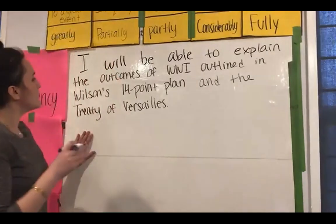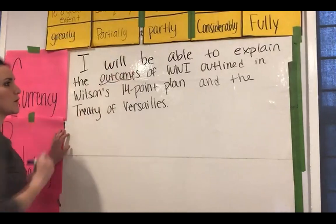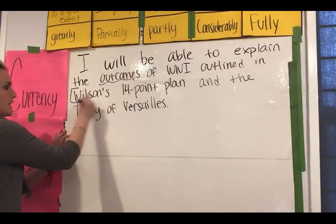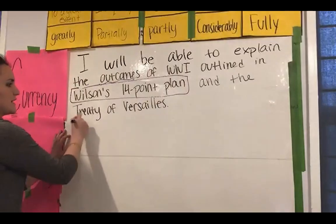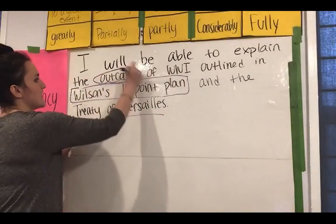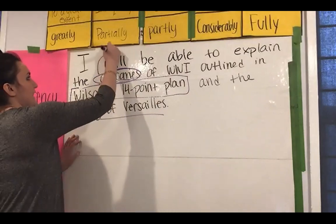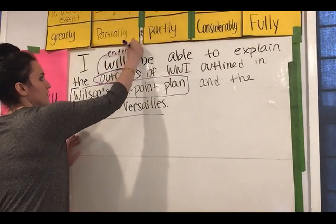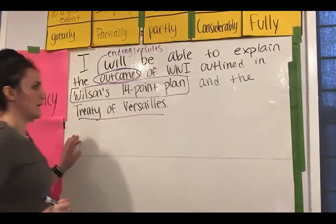I will be able to explain the outcomes of World War I outlined in Wilson's 14-point plan and the Treaty of Versailles. So today we're studying the outcomes, the ending, and the results of World War I.